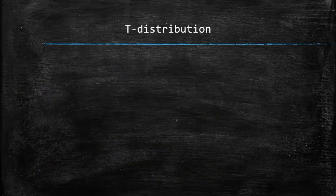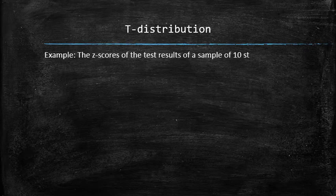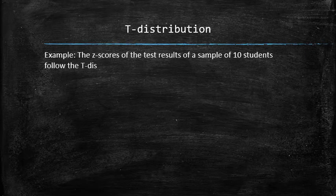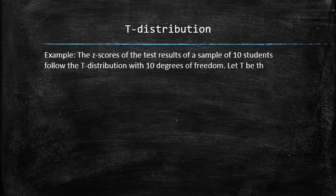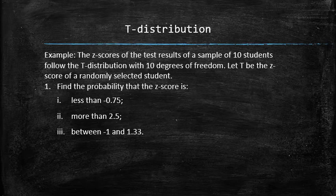Let's see an application of this new knowledge. For example, the z-scores of the test results of a sample of 10 students follow the t-distribution with 10 degrees of freedom. Let t be the z-score of a randomly selected student. Let's find the following probabilities and compute the 95th percentile.